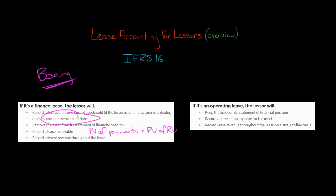At the lease commencement date, they're going to get the selling profit — the difference of sales and COGS. But then they're also going to recognize interest revenue throughout the lease. Now, if we're talking about an operating lease...